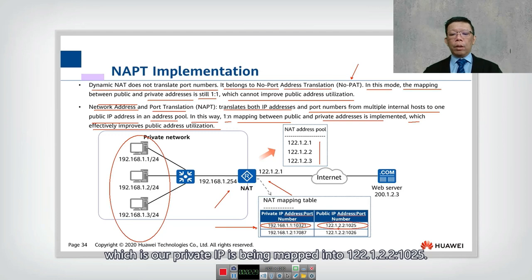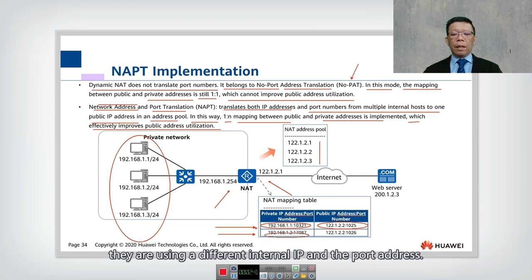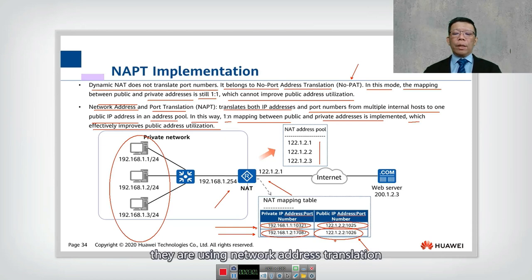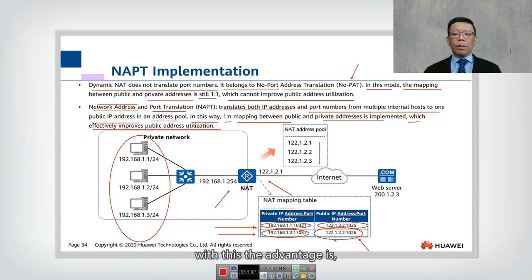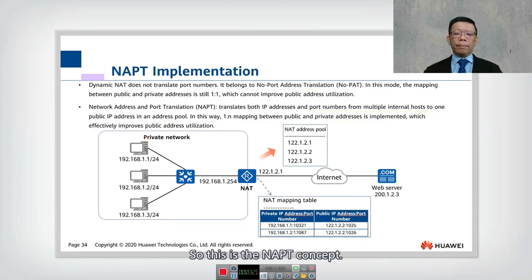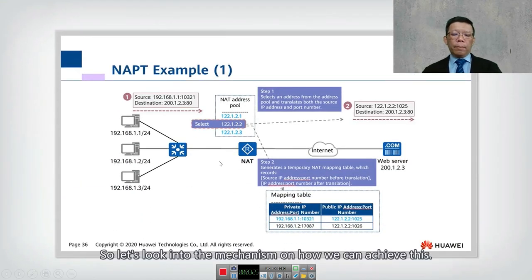That private address is mapped to public IP 122.1.2.2. If a second internal host uses NAPT with a different internal IP and port, the public IP is still 122.1.2.2 but with a different port number, such as 1026. This is what makes NAPT interesting — it combines network address translation with port translation. The advantage is that a single public IP can serve multiple internal IPs.